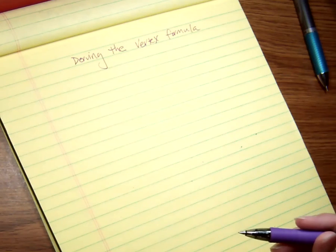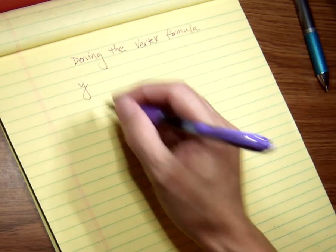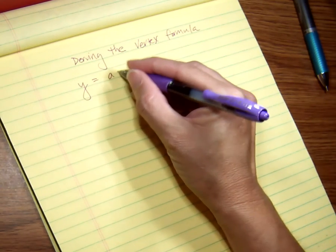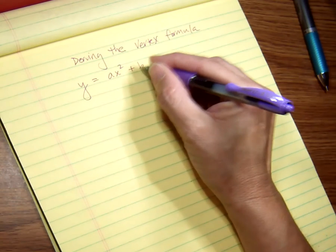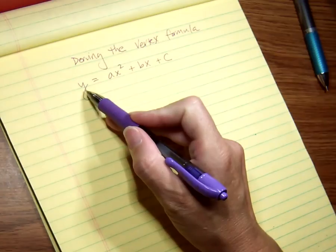We're going to be deriving the vertex formula, and just like we did with the quadratic formula, these start with ax² + bx + c, but instead of being set equal to zero...